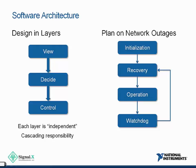The second key software consideration: plan on network outages. When you design your distributed control architecture, think first about what happens when the network fails — how will you know, and how will you recover when it comes back online? This typically involves a watchdog between the layers of your nodes. When that watchdog fails, you go into safe operation to maintain safe states, then watch for the network to come back online and perform a safe recovery. These watchdogs are simply good architecture and programming practice.